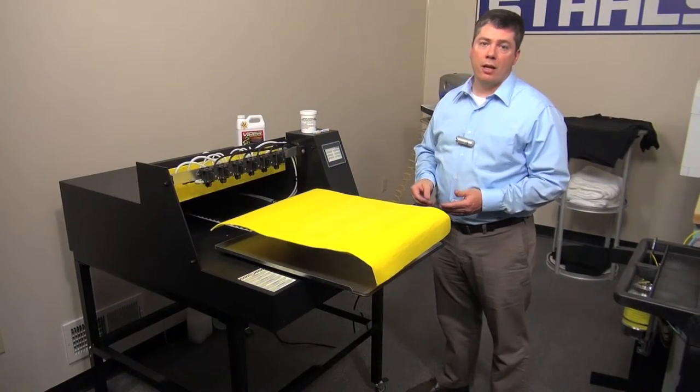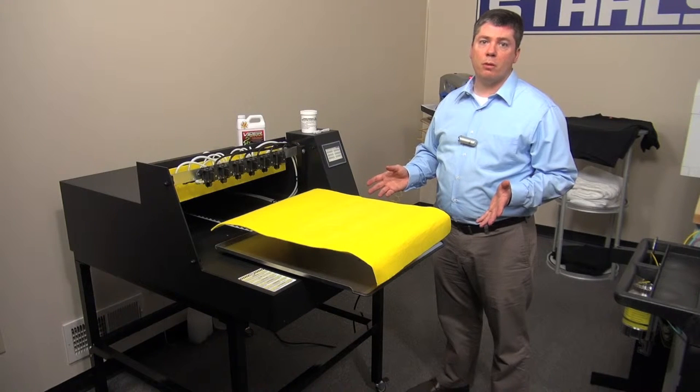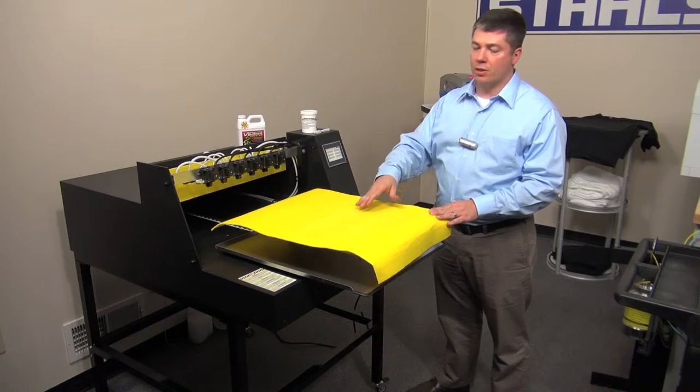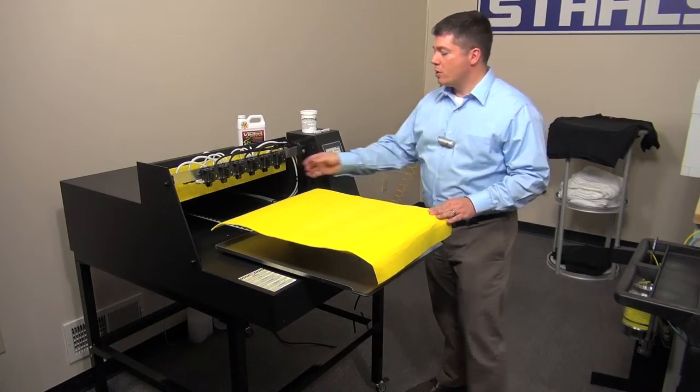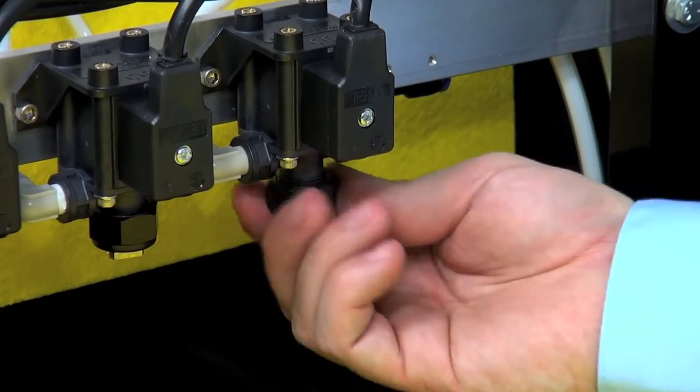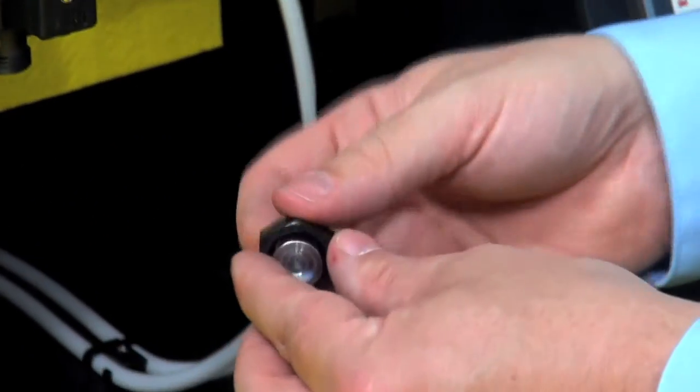If you desire to clean any of the nozzles or are going to be emptying the machine and storing them, or if any of the nozzles are indicating that they're clogged by not having a consistent spray stream, you can simply unscrew them here and remove the nozzle.